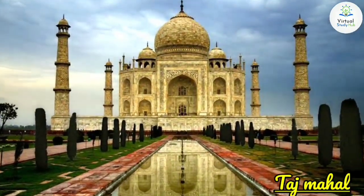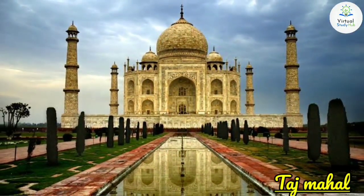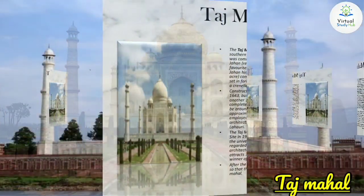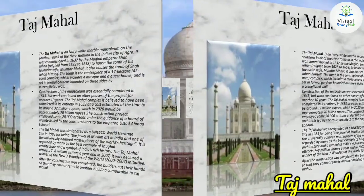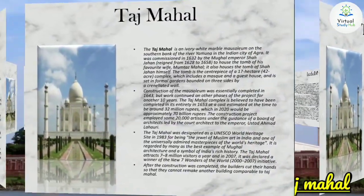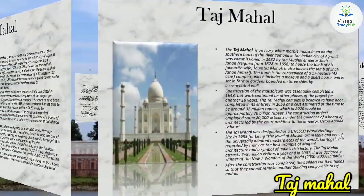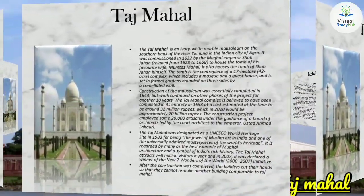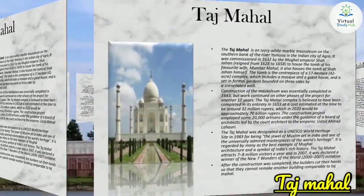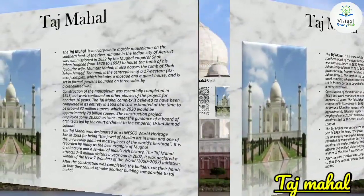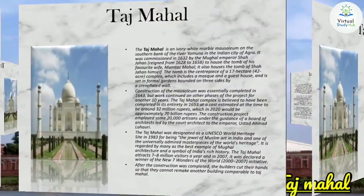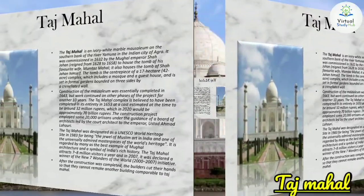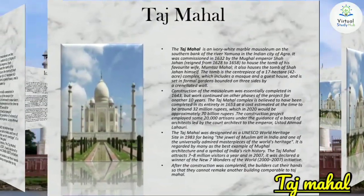The Taj Mahal is an ivory white marble mausoleum on the southern bank of river Yamuna in the Indian city of Agra. It was commissioned in 1632 by Mughal Emperor Shah Jahan as a tomb for his favorite wife Mumtaz Mahal. After his death, he was also buried in this place. The tomb is a centerpiece of a 42-acre complex which includes a mosque and a guest house, set in formal gardens bounded on three sides by a crenellated wall.